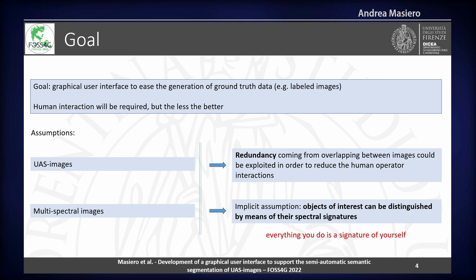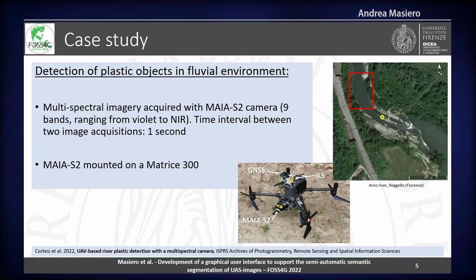This last assumption can also be summarized as: everything you do is a signature of yourself. Just to make things clear, the real motivation of this work is that we collected a lot of images in order to make plastic object detection in a fluvial environment. Our original idea was to properly deal with these kinds of images, so we started developing this kind of interface in order to help ourselves produce ground truth data for properly training a machine learning tool for the detection of plastic objects in this kind of problem.